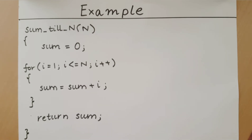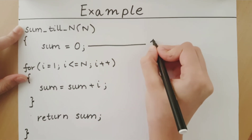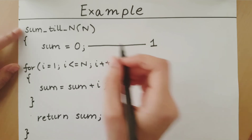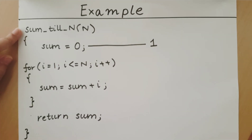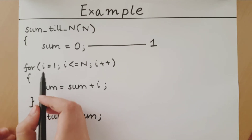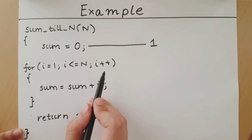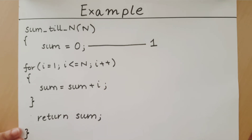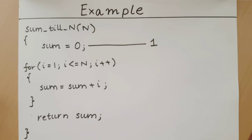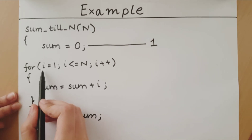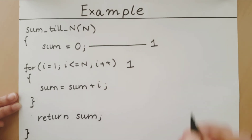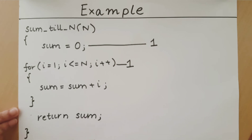Now that we have the algorithm, let's start to count the number of operations. The first step — assigning 0 to sum — takes one operation. Now let's look at the for loop, which has three parts: initialization, a condition, and an increment. Starting with the initialization, i = 1 occurs at the very beginning of the for loop and only occurs once. The number of primitive operations in the initialization is 1, and that only occurs once.